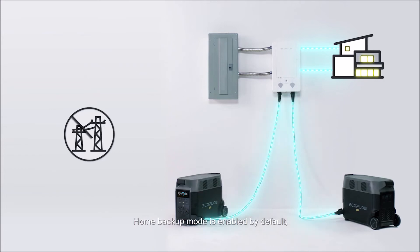Home backup mode is enabled by default, which means that if grid power stops, the system will switch to Delta Pro's battery.